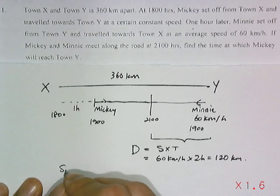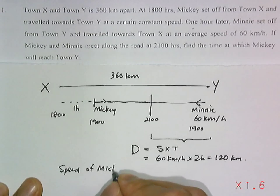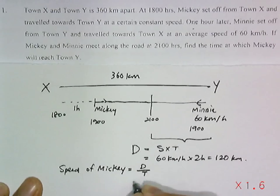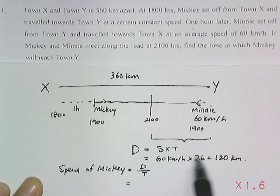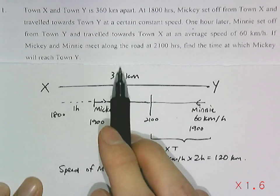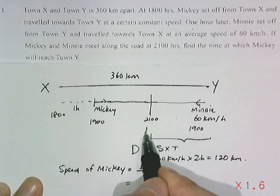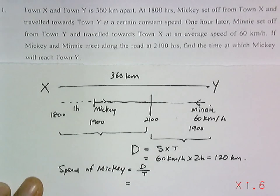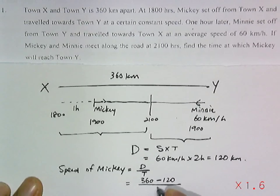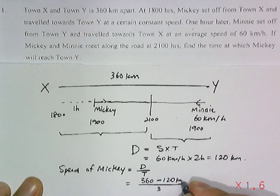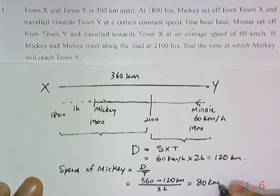The average speed for Mickey, by Mickey in this three hours, will be 360 minus 120 over three hours. That will easily give us a speed, 80 km per hour.